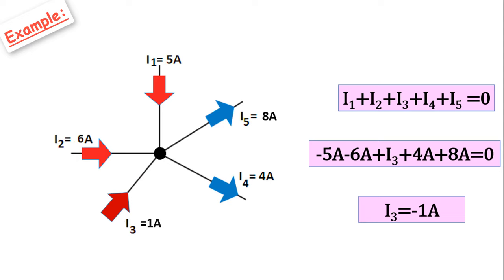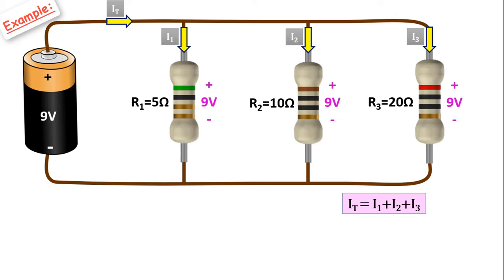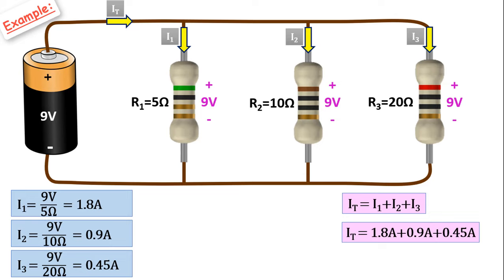Now let's find the mains current — that is, the total current — in this example. According to Kirchhoff's current law, IT equals I1 plus I2 plus I3. Since the resistors are in parallel, the voltage across each resistor equals the source voltage of 9 volts. I1 equals 9 volts divided by 5 ohms equals 1.8 amps. I2 equals 9 volts divided by 10 ohms equals 0.9 amps. I3 equals 9 volts divided by 20 ohms equals 0.45 amps. The mains current IT equals 1.8 plus 0.9 plus 0.45 equals 3.15 amps.